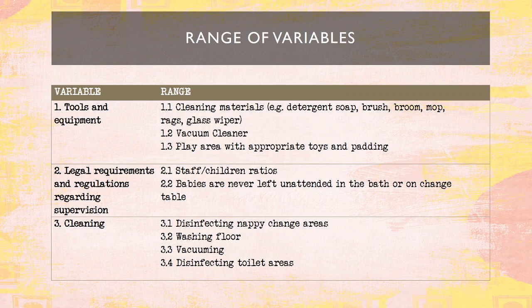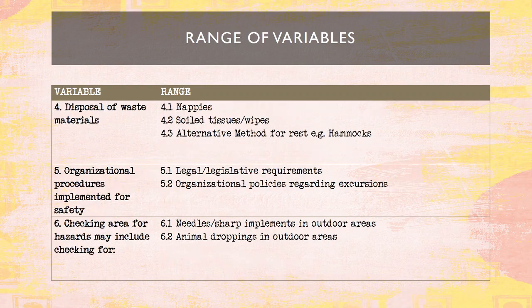Cleaning includes disinfecting nappy change areas, washing floors, vacuuming, and disinfecting toilet areas. Disposal of waste materials includes nappies, tissues, and wires, with alternative methods available. Organizational procedures implemented for safety include legal and legislative requirements, and organizational policies regarding excursions. Checking areas for hazards may include checking for needles and sharp implements in outdoor areas, and animal droppings — and this can also happen indoors.